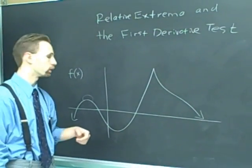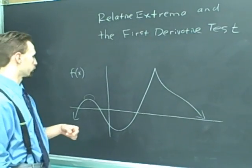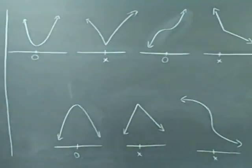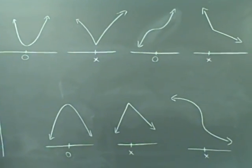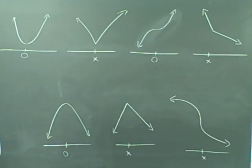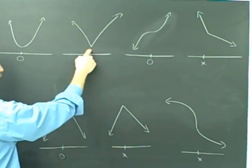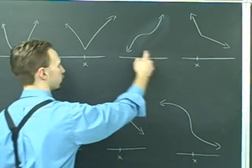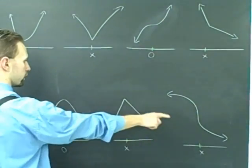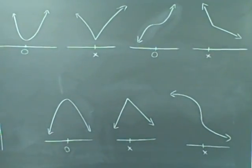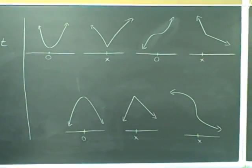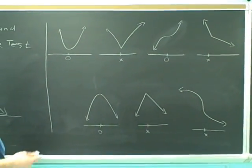Relative extrema must occur at critical numbers. Let's see how we can figure out how to distinguish the mins from the maxes. I have seven examples here of some functions, each of which has a critical number. But we have a relative min, relative min, neither, neither min nor max, relative max, relative max, and neither again. While relative extrema must occur at critical numbers, if a function has a critical number it does not necessarily imply that it has a relative max or min.